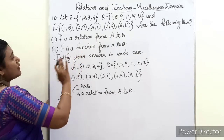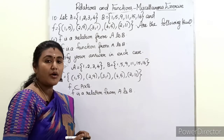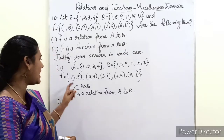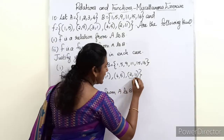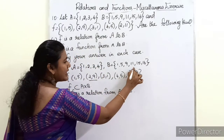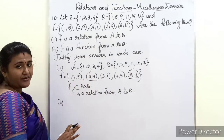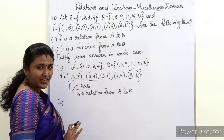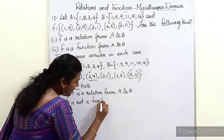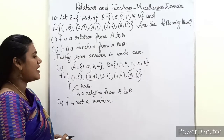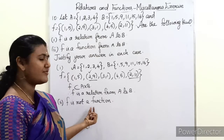Second, is f a function from A to B? A function requires no two ordered pairs to have the same first element. Here, (2,9) and (2,11) both have first element 2. So f is not a function. f is a relation but not a function, since two ordered pairs share the same first element.